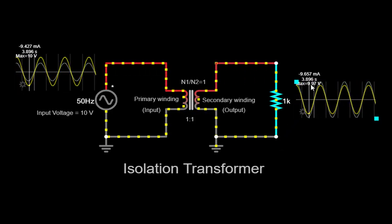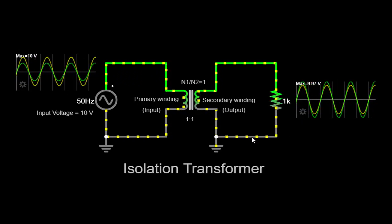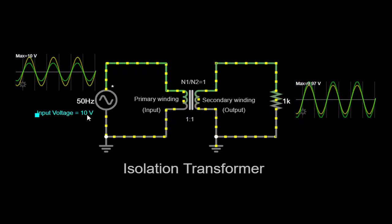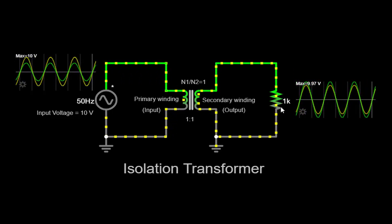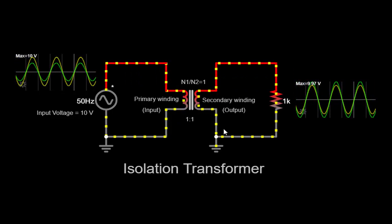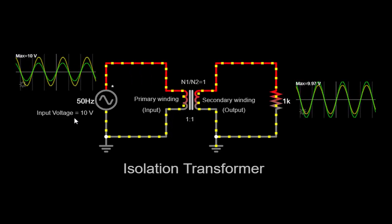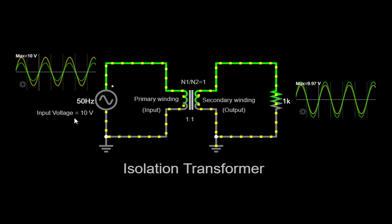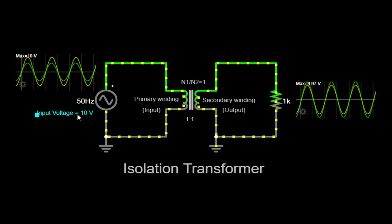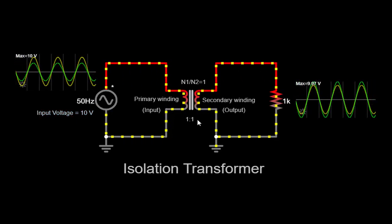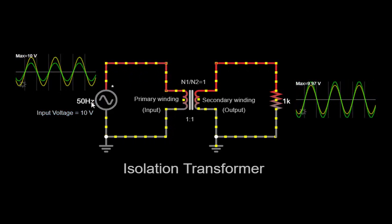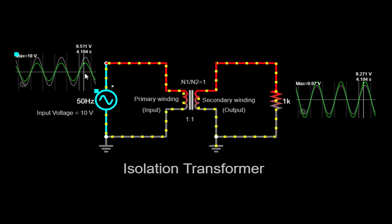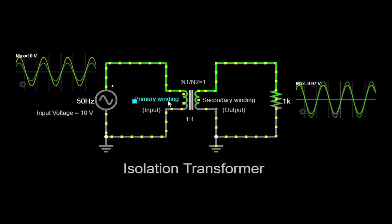Output voltage: 9.97 volts AC. A resistor connected to the secondary winding with a value of 1 kOhm. Let's walk through the operation of our simulator circuit step-by-step. Input voltage: We start with an input voltage of 10 volts AC and a frequency of 50 Hz. This alternating current is applied to the primary winding of the isolation transformer.